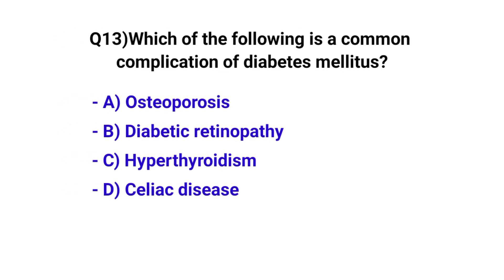Question number 13. Which of the following is a common complication of diabetes mellitus? The correct option is B. Diabetic nephropathy.